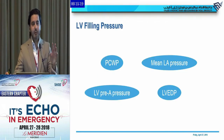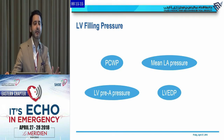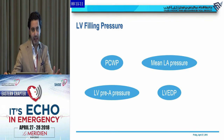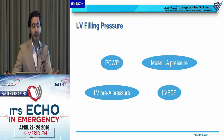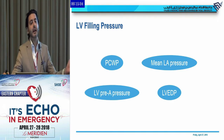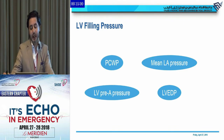We need to understand a few terms here. What do we mean by LV filling pressure? Is it pulmonary capillary wedge pressure? Is it the mean LA pressure, or LV pre-atrial contraction pressure, or the LV end diastolic pressure? We really need to differentiate between these terms.